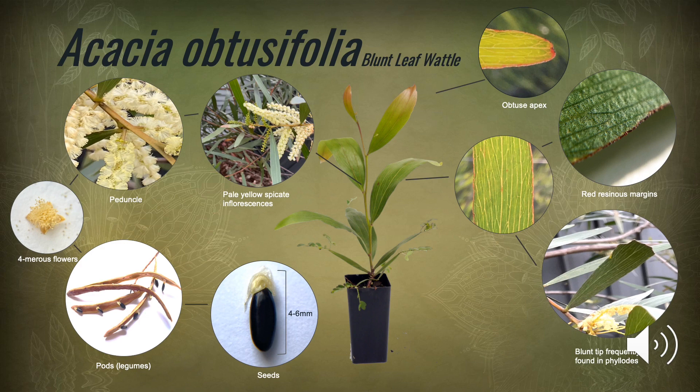The phylodes of Acacia obtusifolia are generally narrowly elliptic, but can also be broadly elliptic, between 12 and 25 centimetres in length, dark green and leathery. The phylodes commonly contain 2 to 5 primary veins, with anastomosing or interconnecting secondary veins. While closely related to Acacia longifolia and sharing some similarities, Acacia obtusifolia can be easily distinguished by the red resinous phylode margins.